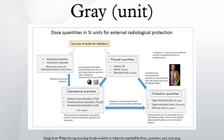One gray is the absorption of one joule of energy, in the form of ionizing radiation, per kilogram of matter. The gray was named after the British physicist Louis Harold Gray, a pioneer in the field of measurement of radium radiation and X-rays and their effects on living tissue, and was adopted as part of the International System of Units in 1975.